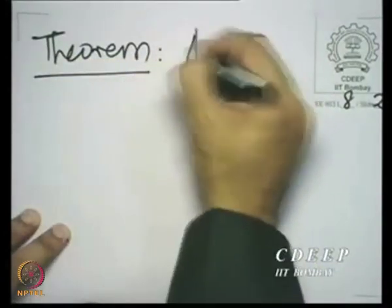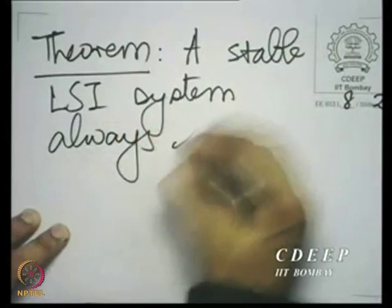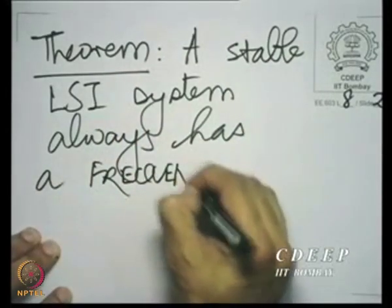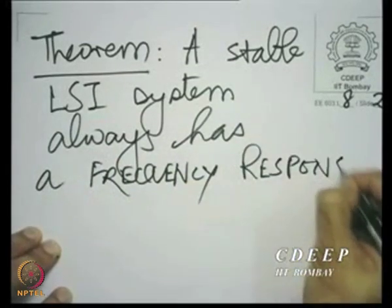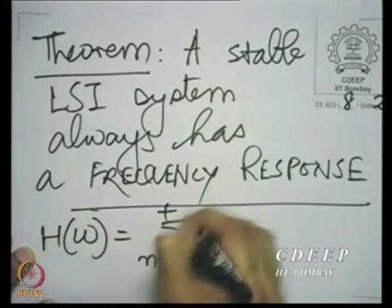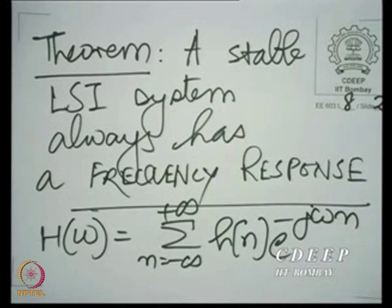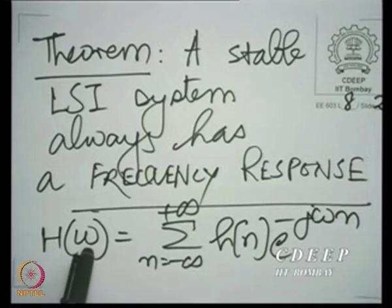The catch is that we need h(ω) to converge. What we have seen is that for stable systems, it definitely converges. One thing we can say with certainty now, and we say it formally: a stable LSI system always has a frequency response. Frequency refers to the frequency of the rotating complex number. We call this the frequency response of that LSI system.